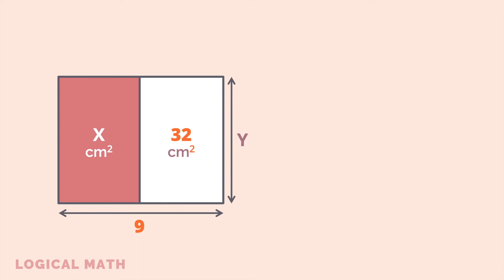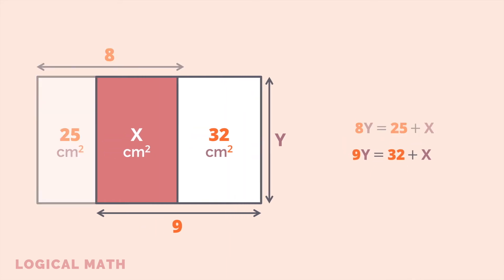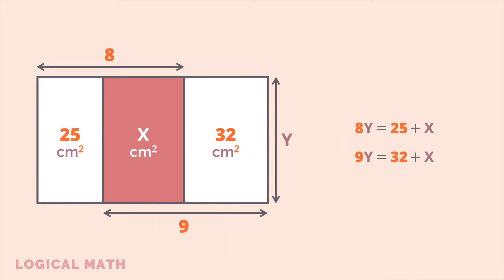For the middle and right rectangles, the total area is equal to 9 times Y, or 32 plus X. Thus we get the system of equations in two variables: 9Y = 32 + X and 8Y = 25 + X.